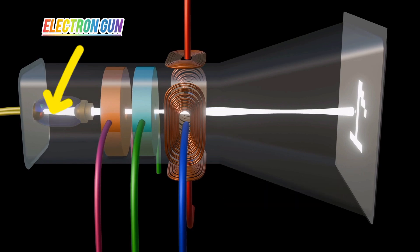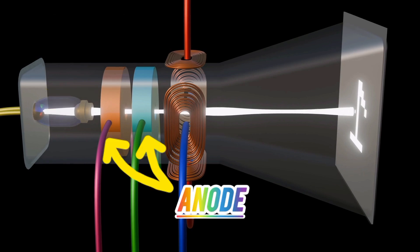The electron gun, which generates a narrow beam of electrons. The anodes, which accelerate the electrons.